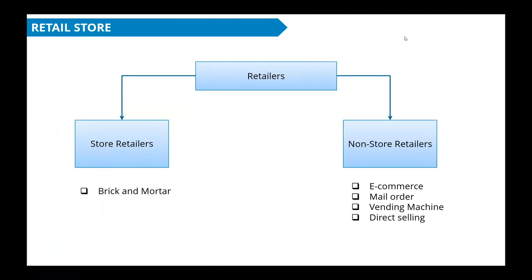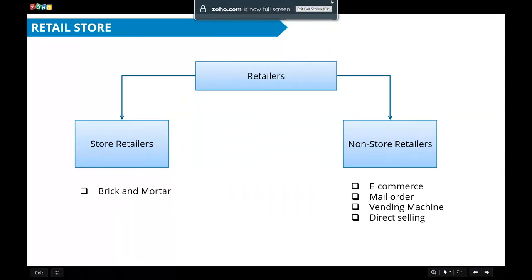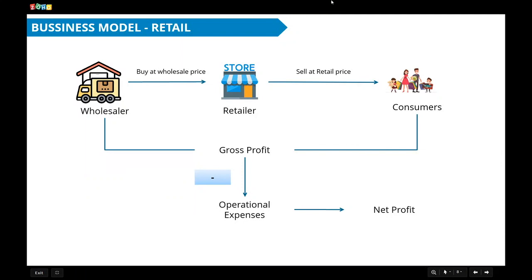The traditional business model followed by retailers is simple. As a retailer, I buy products in bulk at wholesale price from my wholesaler or suppliers, then sell them in smaller quantities to end consumers at the retail price. The difference between wholesale price and retail price is the gross profit. I use this gross profit to cover all operational expenses, and the remaining profit is the net profit for my retail store.